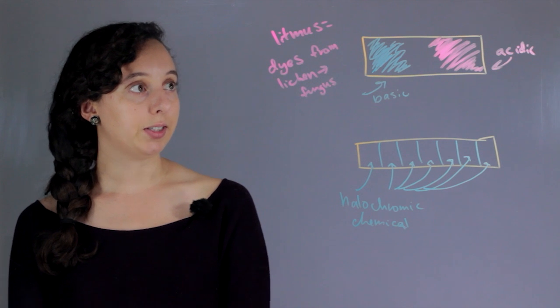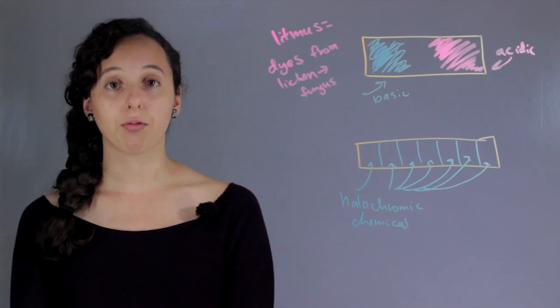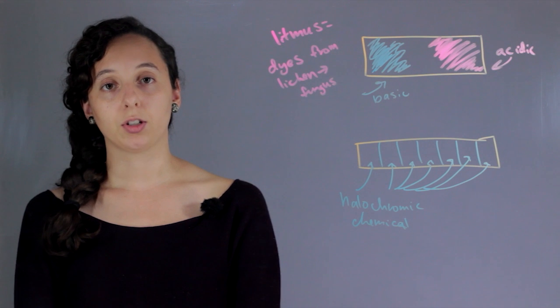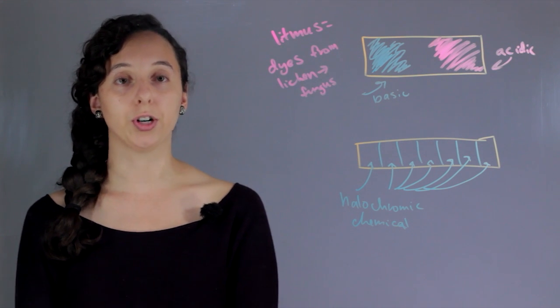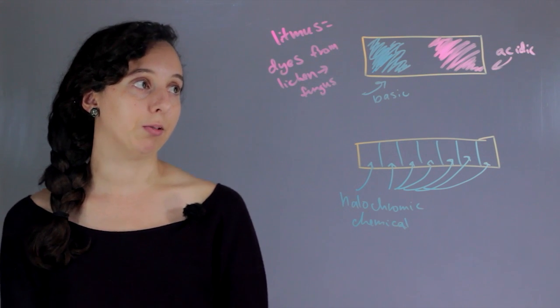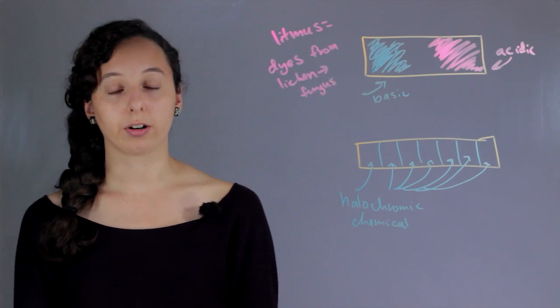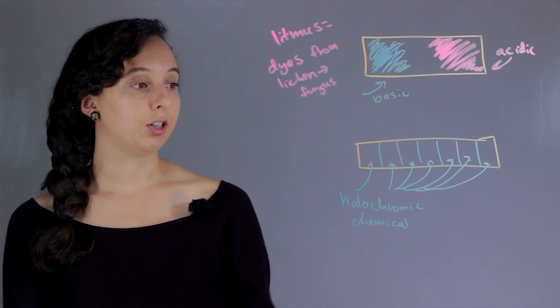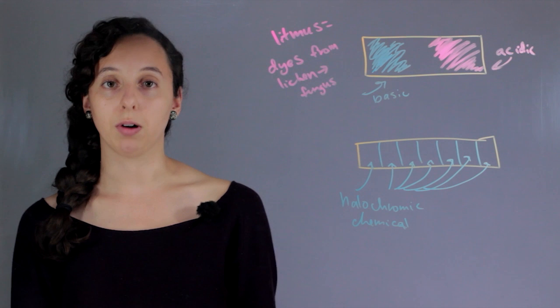So basically a litmus test and a general acid base test are the same. They're trying to get to the same goal. They're basically the same way of doing it, but a litmus test is just older and only has a couple. And the new acid base indicator way is newer and better.